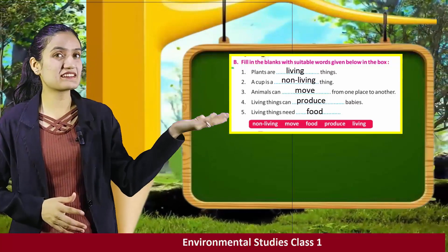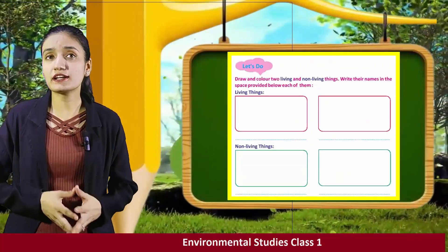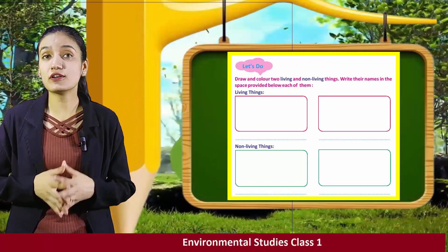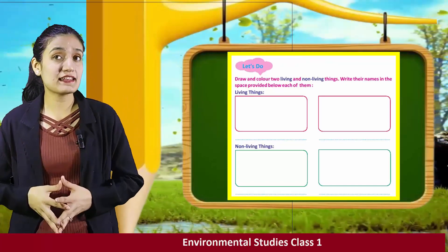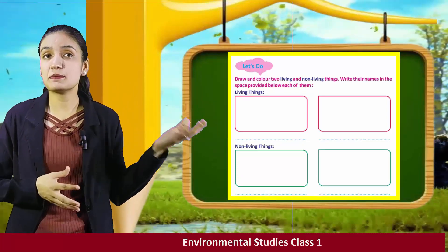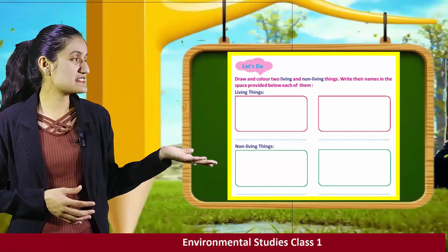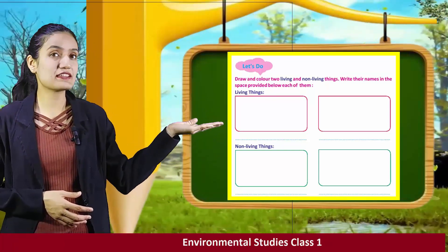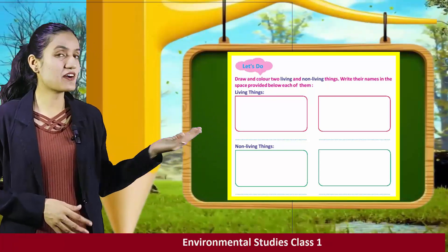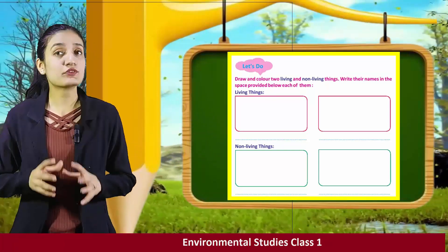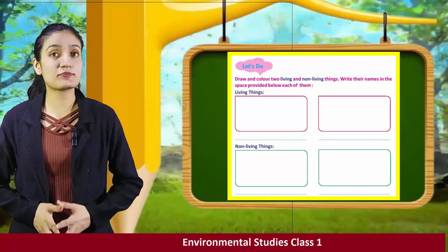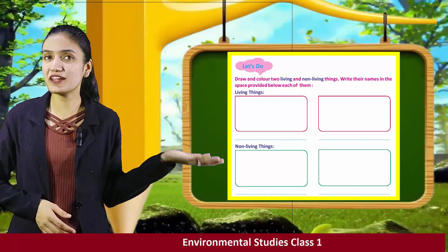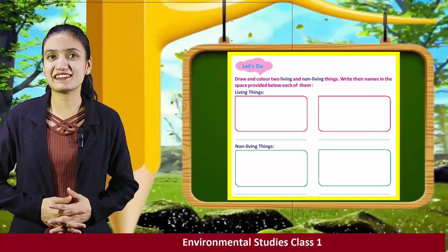Now kids, let's draw and color living and non-living things. Write their names in the space provided below each of them. Here you can see the place for living things and non-living things. In the living things boxes, you have to draw and color two living things.